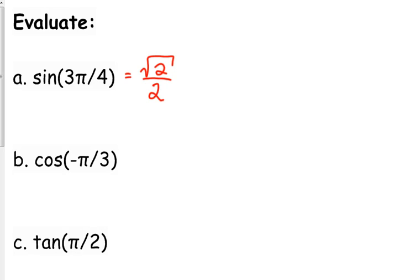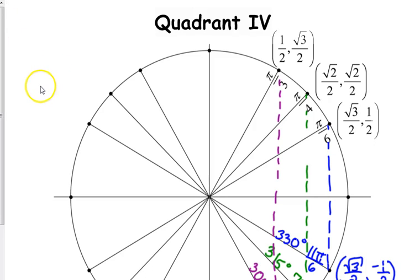Now, negative angles. Here is what I think is the easiest way to deal with negative angles. If it asks for the cosine of negative pi over 3, what you do is you go to the positive angle.